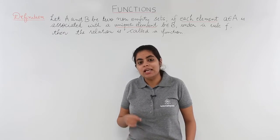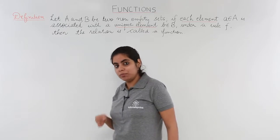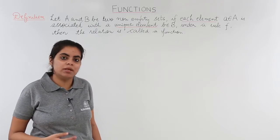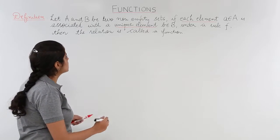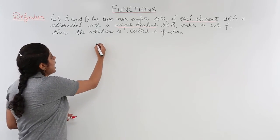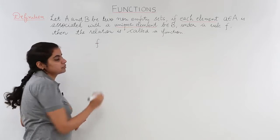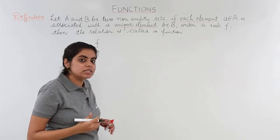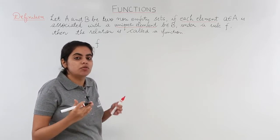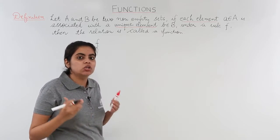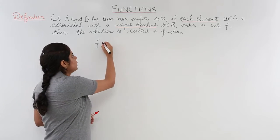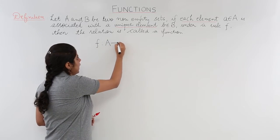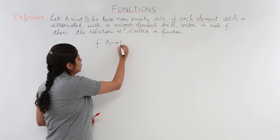Let's see what we mean by 'unique' — we also have some examples for that. Suppose I have a function f from the first set to the second set, that means from A to B, so it is denoted as f: A → B.